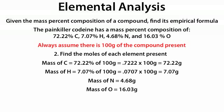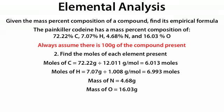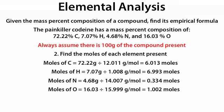Step 2: find the moles of each element present. We divide 72.22 grams of carbon by its molar mass of 12.011 g/mol to get 6.013 moles. We divide 7.07 grams of hydrogen by 1.008 g/mol to get 6.994 moles. We divide 4.68 grams of nitrogen by 14.007 g/mol to get 0.334 moles. And we divide 16.03 grams of oxygen by 15.999 g/mol to get 1.002 moles.